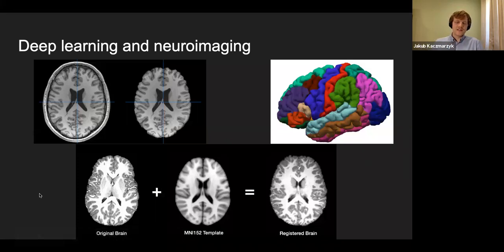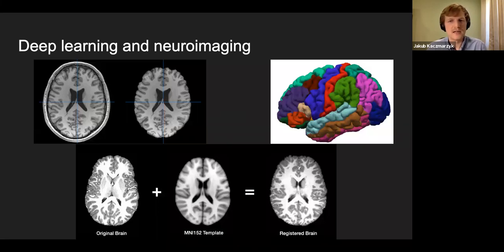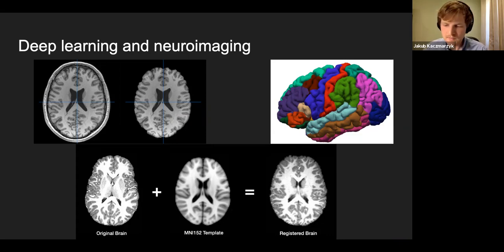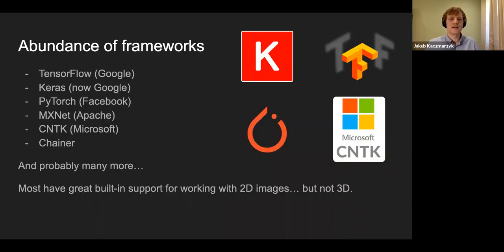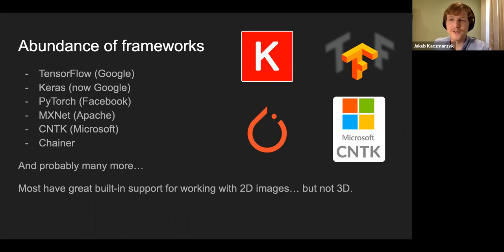In deep learning and neuroimaging, there are lots of places for deep learning to contribute. One is brain extraction — a segmentation problem figuring out where the brain is in space. Another is parcellation or segmentation of the brain. There's also registration, which is aligning a brain to some template. To do this, there are many frameworks: TensorFlow, Keras, PyTorch, MixNet, CNTK, Chainer, and more. Many have great built-in support for 2D images, but I haven't seen one with great built-in support for 3D images like we have in brain imaging.